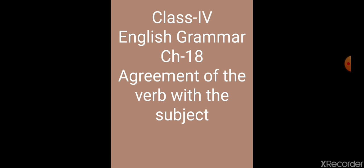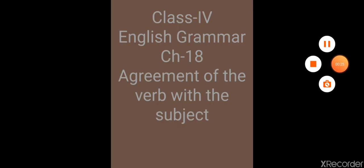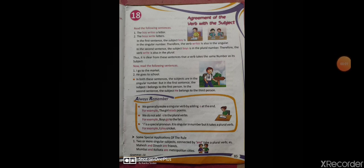With the completion of this chapter, your syllabus of unit test will also be over. Starting our today's video with chapter number 18, that is Agreement of the Verb with the Subject. From the name of the chapter, it is easy for us to understand that this chapter is all about the rules that we have to use while writing the verb in the sentence according to the subject.